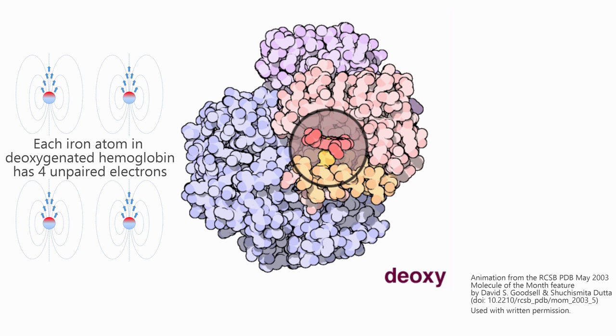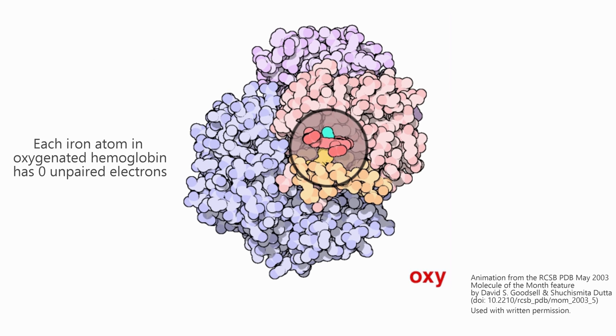making it paramagnetic and a little attracted to a magnet. The iron atoms in oxygenated hemoglobin turns out to have only paired electrons. No unpaired.